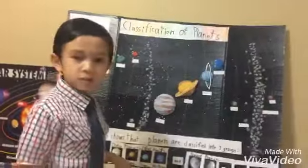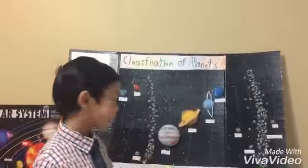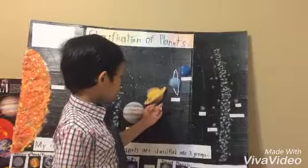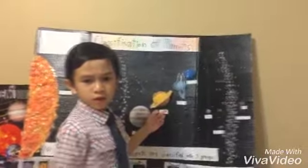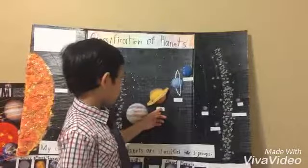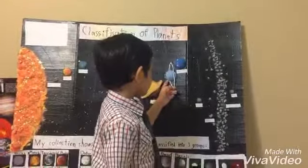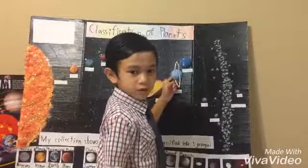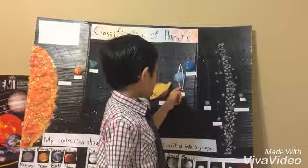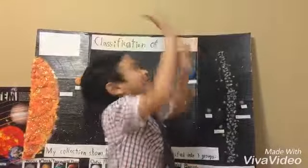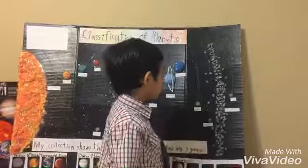Jupiter was named after the supreme Roman god. Saturn was named after the noble Roman god of time. Uranus was named after the Greek god of the sky. Neptune was named after the Roman god of the sea.